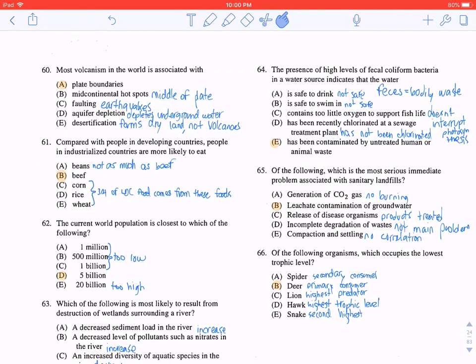Question 64: The presence of high levels of fecal coliform bacteria in a water source indicates that the water... It would be E, because feces means bodily waste. So E reads, has been contaminated by untreated human or animal waste. It wouldn't be A, because it's not safe to drink water contaminated by feces. Same thing with B.